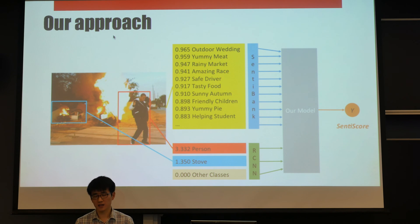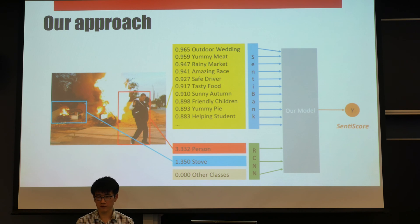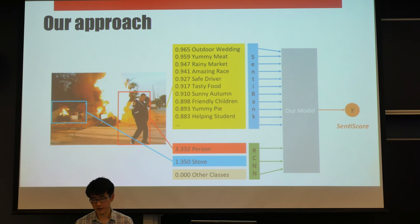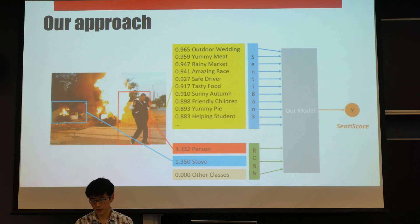We believe that the objects in the image, as well as their size and position, will influence people's perception of the sentiment embedded in the image. So we extract that kind of information from RCN and combine it with the sentiment output — the 1,200 adjective-noun pairs with weights — into our model to produce a sentiment score.